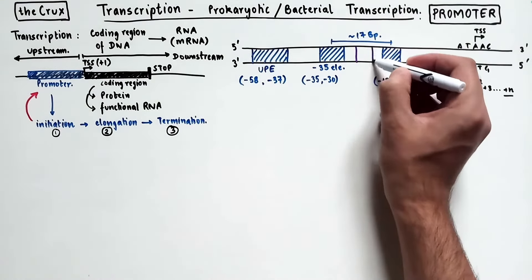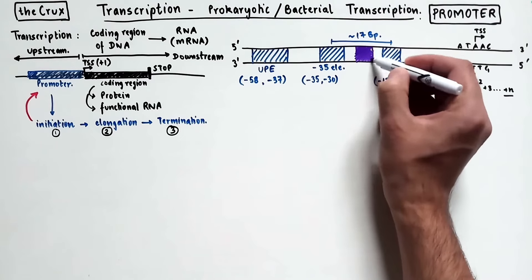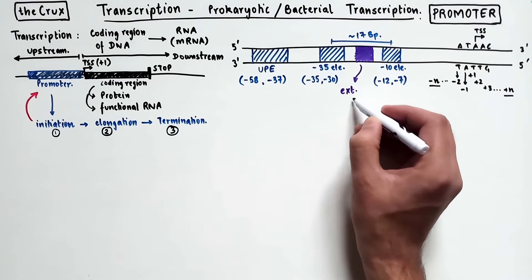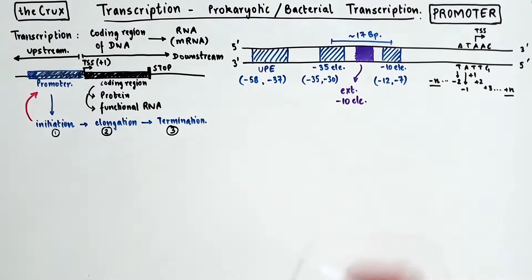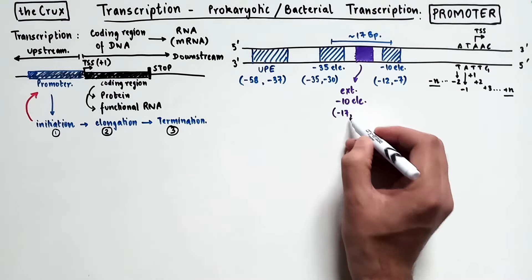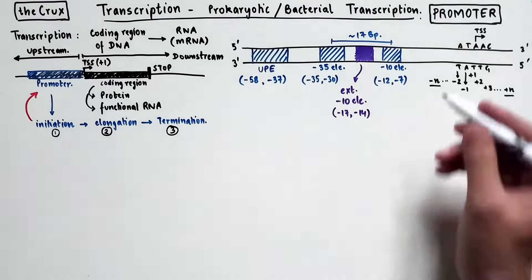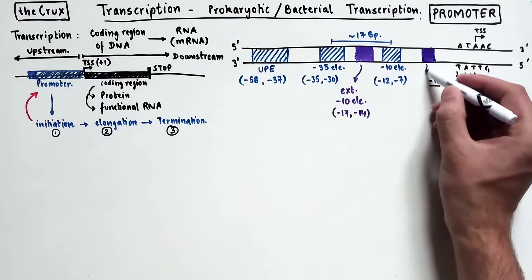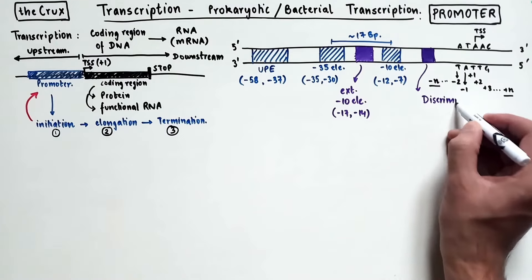Sometimes the negative 35 element or the negative 10 elements are not available in the promoter of some genes. In those cases, you can find an extended negative 10 element at the position negative 17 to negative 14. And then there are some genes that carry a discriminator promoter element, which is usually three bases in length.